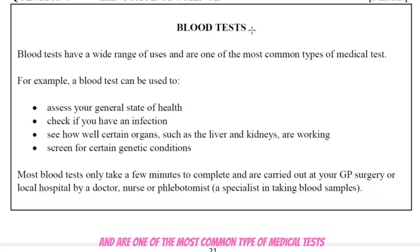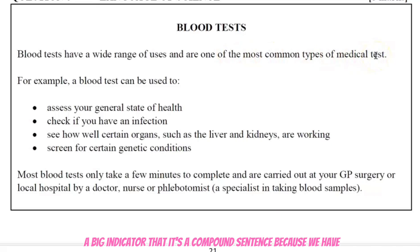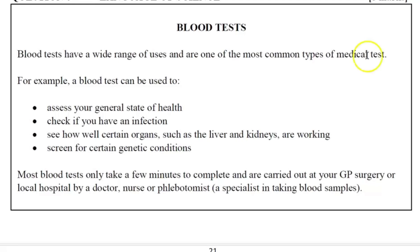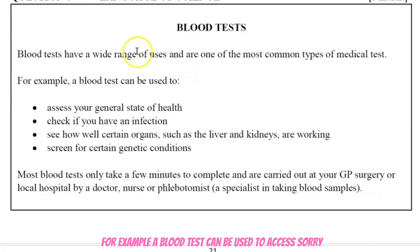Let's go to the first sentence: 'Blood tests have a wide range of uses and are one of the most common type of medical tests.' What sentence type is this? It is a compound sentence. A big indicator is the conjunction 'and' — a FANBOY conjunction. Compound sentences are two independent clauses joined together by a conjunction.